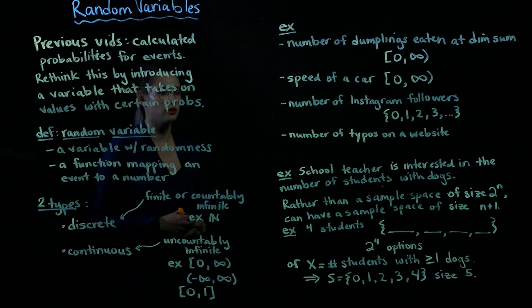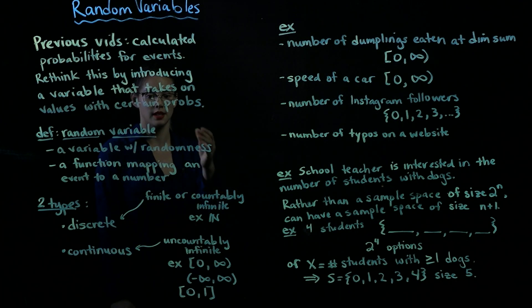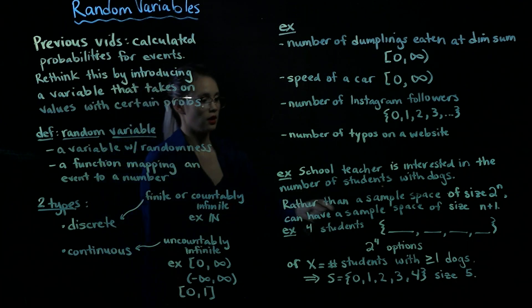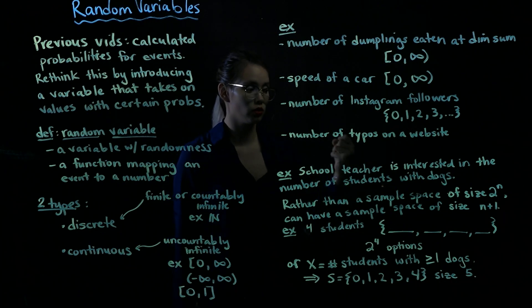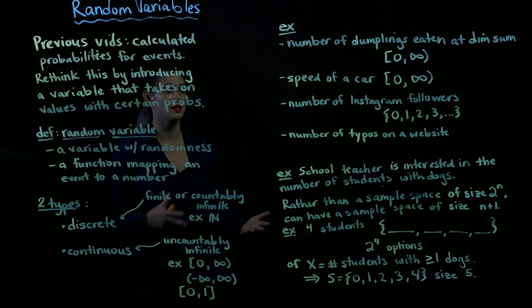One reason that we might want to introduce these random variables is it can sometimes simplify the sample space. So for example, imagine we have a school teacher and she's interested in the number of students with dogs. If she just went through and created a sample space, as in like, okay, here's the first student, they could have dog or no dog, next student dog or no dog, next student dog or no dog, that would create this humongous sample space. We would have 2 to the n as the size of our sample space. So if n is a big number, then this would be a really huge sample space. So we could simplify it by defining a random variable.